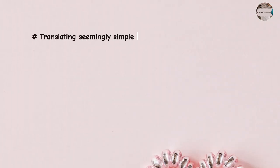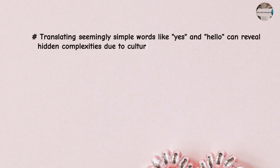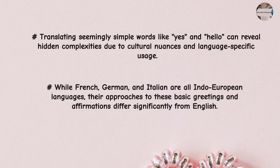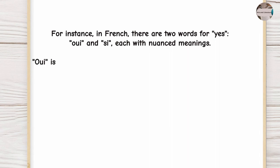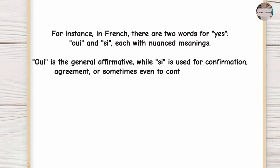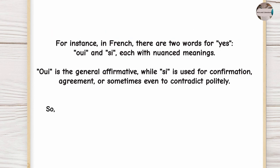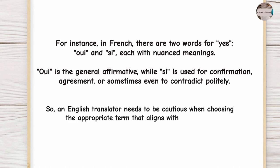Translating seemingly simple words like 'yes' and 'hello' can reveal hidden complexities due to cultural nuances and language-specific usage. While French, German, and Italian are all Indo-European languages, their approaches to basic greetings and affirmations differ significantly from English. For instance, in French there are two words for 'yes' — 'oui' and 'si' — each with nuanced meanings. 'Oui' is the general affirmative, while 'si' is used for confirmation, agreement, or sometimes even to contradict politely. So an English translator needs to be cautious when choosing the appropriate term that aligns with the context.